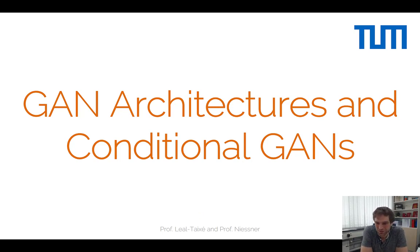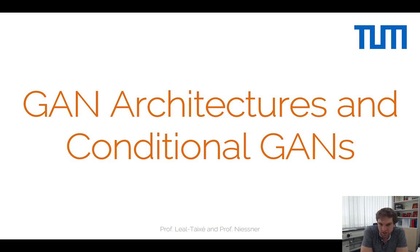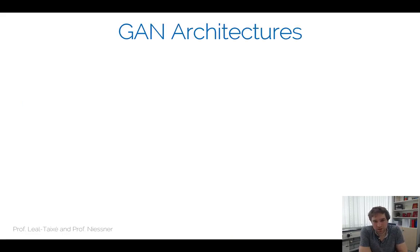Welcome to the next lecture of the advanced deep learning for computer vision course. In the last lecture we talked about generative models, specifically GANs — generative adversarial networks. Today I would like to continue that discussion, and the first thing I want to cover is common GAN architectures, of which there is a large variety.